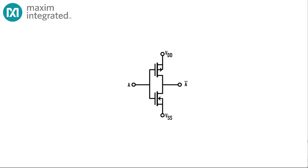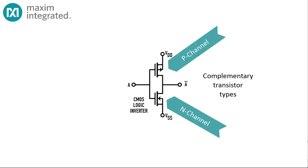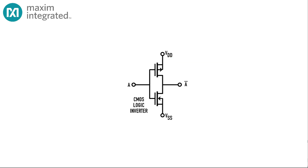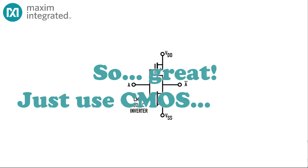CMOS drivers and receivers with hysteresis would seem to fix both problems. The C in CMOS stands for complementary, and since opposite polarity transistors are used to pull up and pull down the outputs, the drive strength is nearly symmetrical. And many CMOS devices have inputs with hysteresis. So, great. Just use CMOS, right?